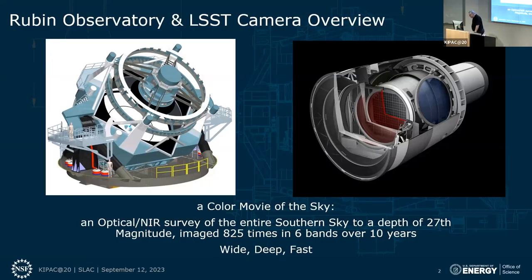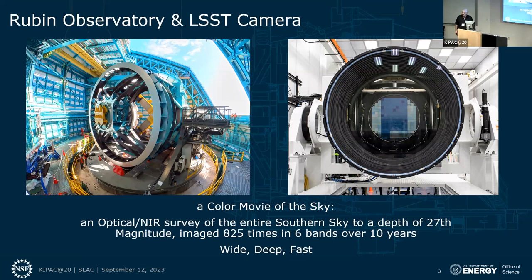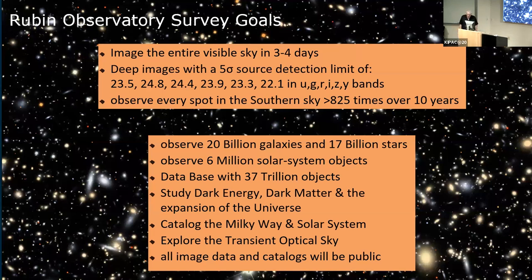For many years when we talked about LSST — before it was Rubin — we showed CAD models. As beautiful as they are, it is much better to look at the real thing. Chi-Wei already showed the image on the left from about eight or ten months ago, showing the telescope mount in an advanced state of construction. On the right is the camera, almost fully assembled late last year, and you can see the beautiful world's largest focal plane. The theme of this talk is: why did we build the camera the way we did, and how does that design enable the LSST survey?